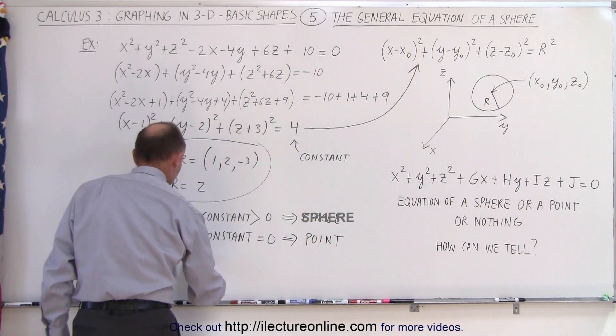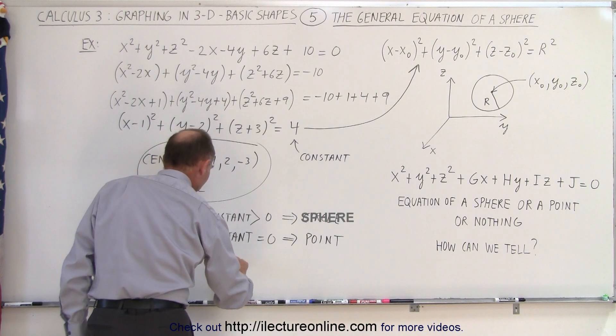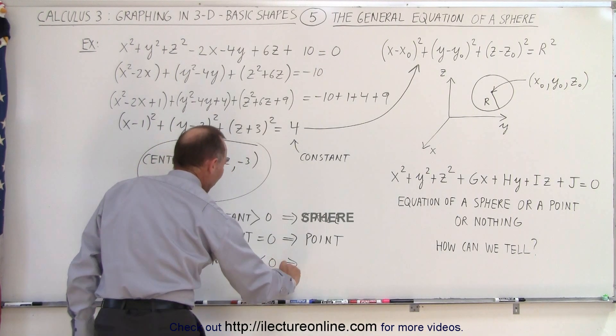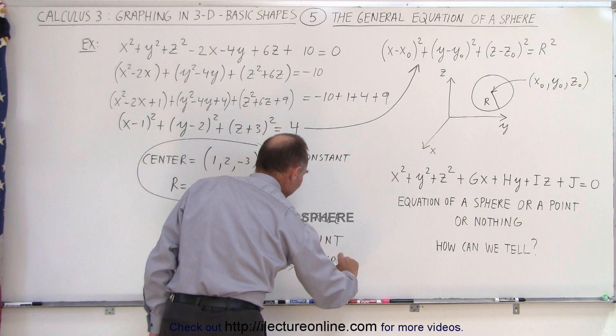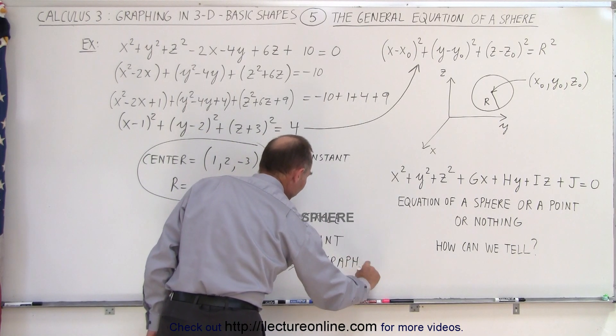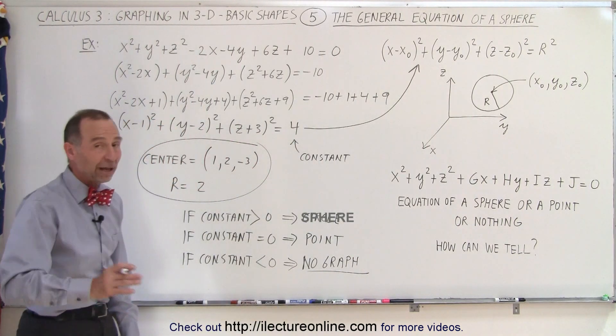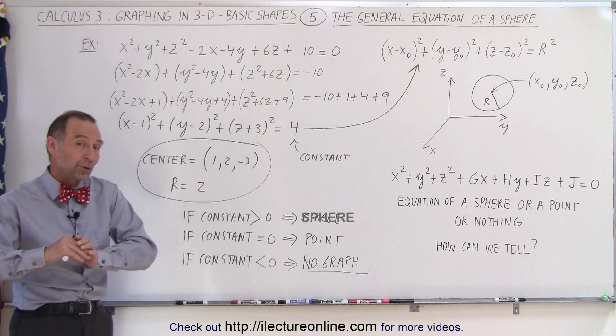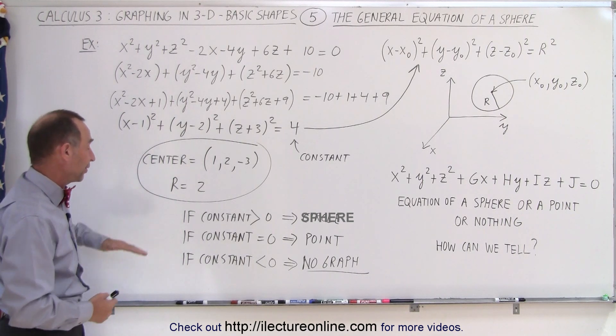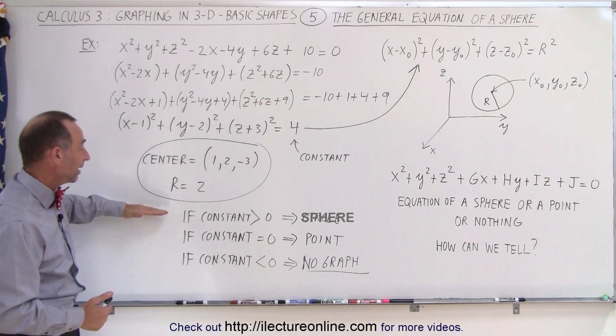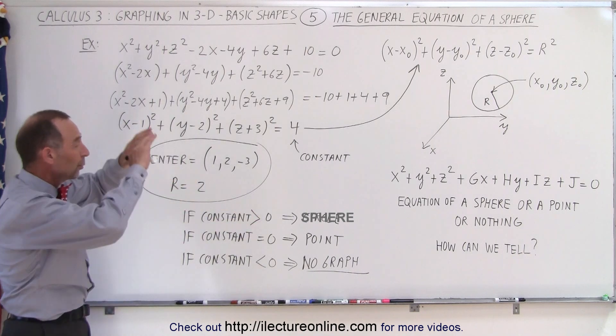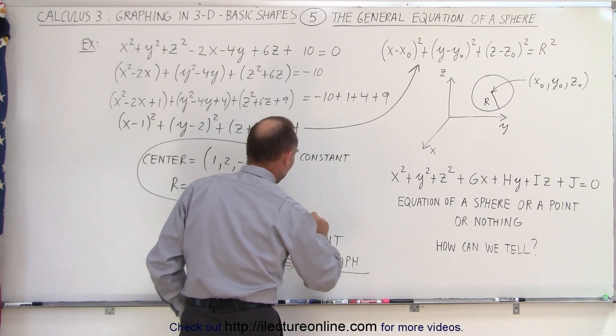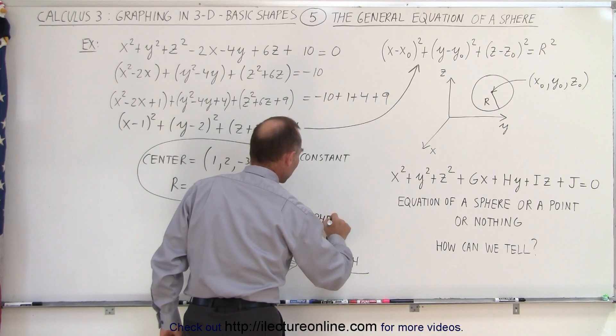And finally, if the constant on the right side of that equation is less than zero, then we have no graph, meaning there's nothing there that it can represent, at least not in the real world, in the imaginary world, yes, but in the real world, no. So we have what we would call an imaginary sphere, perhaps, but not a real sphere. So yes, it's a, if the constant is greater than zero, we have, and I shouldn't write it as a circle, really, because we're in three-dimensional space, it's actually a sphere.